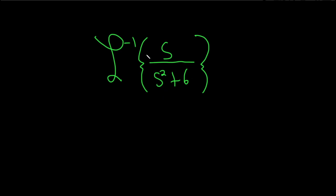So this looks very similar to one of the formulas. Recall if you have the inverse Laplace transform of s over s squared plus k squared, you end up with cosine of kt.